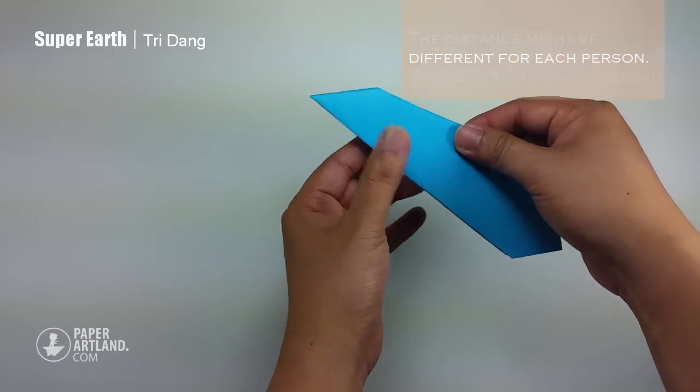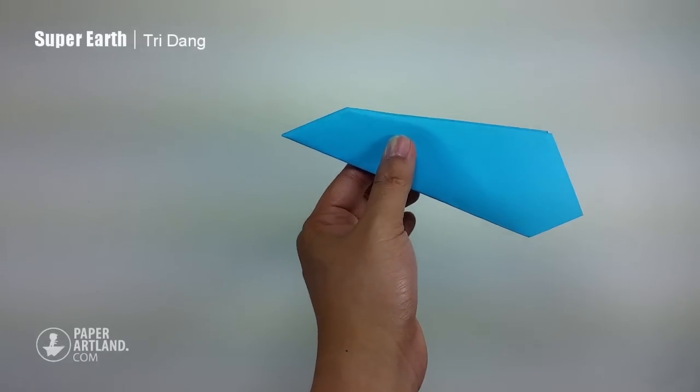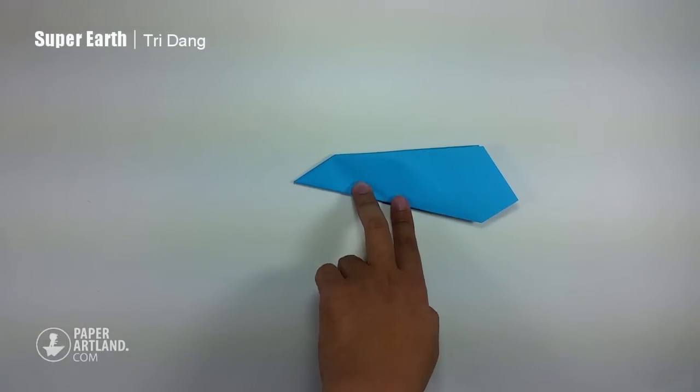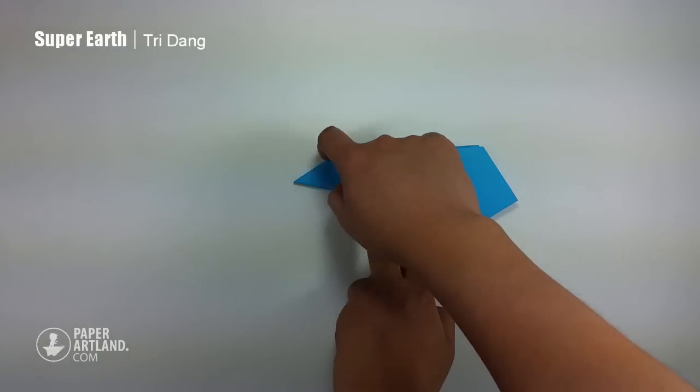After you fold this step, I think this is the hardest step for now. Next, I'm going to create the wings. I will match this edge to the top here.